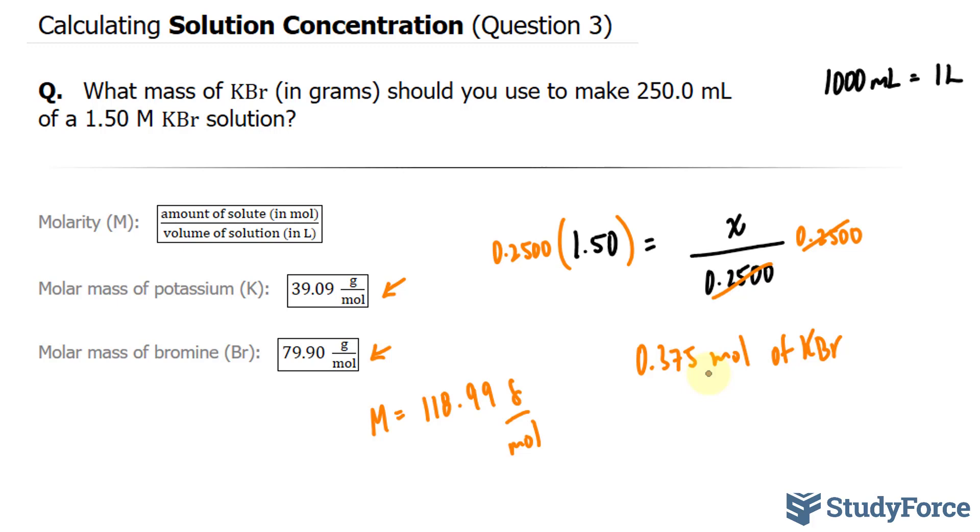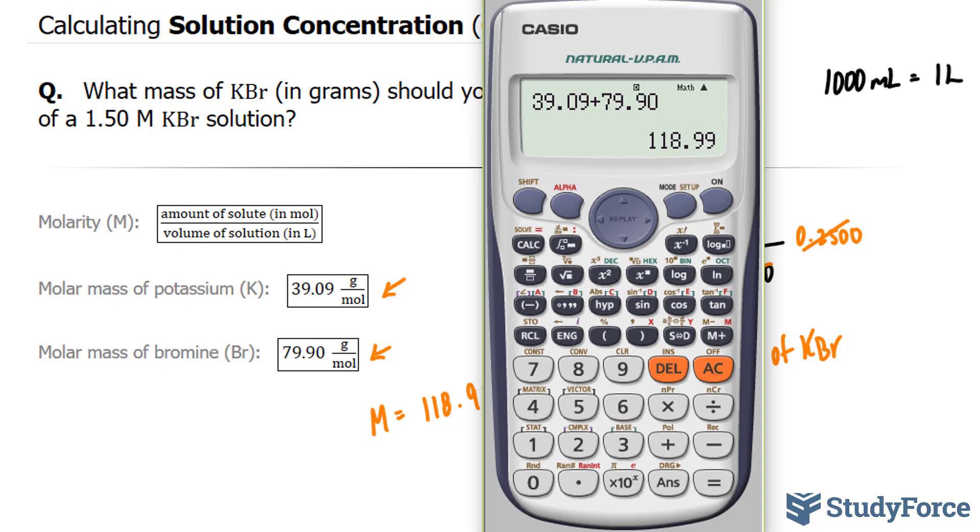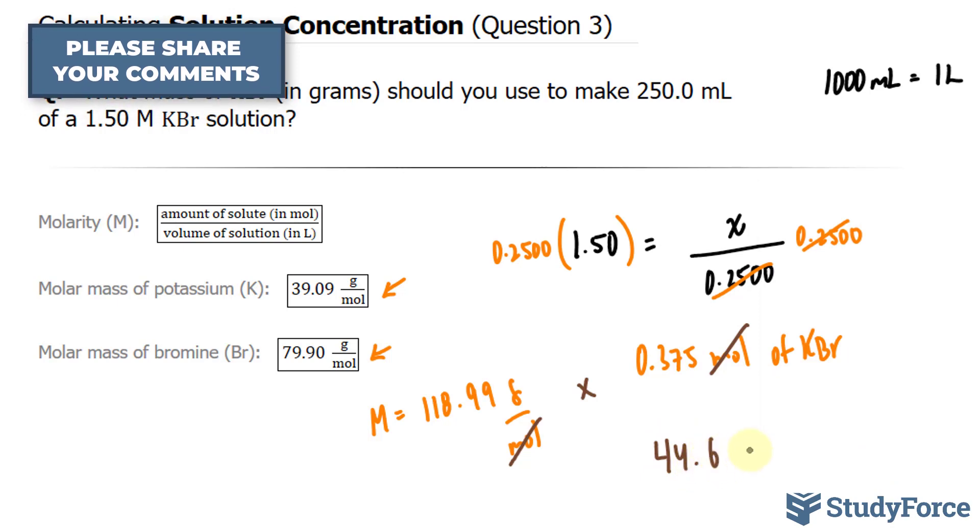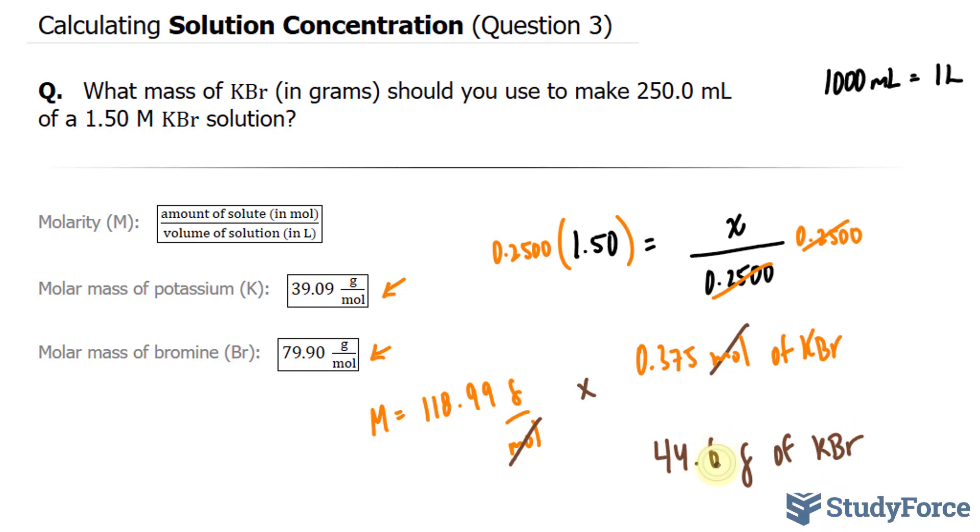We have the number of moles. We have the molar mass. If I multiply this number with this number, technically this is a rate, because it's one unit over another. But anyway, if you multiply this with this, the number of moles will cancel out, because you have one mole at the top, one at the bottom. Using our calculator, multiplying these two numbers out, we end up with 44.6 grams of potassium bromide. I stopped after this six, because that's the third significant figure, and that is how to calculate solution concentration.